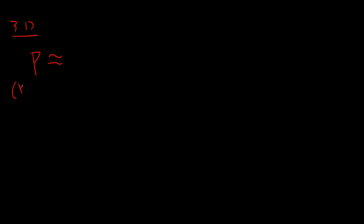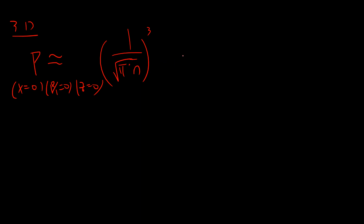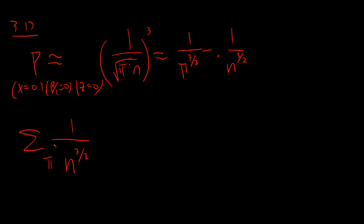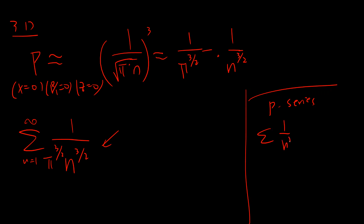Now let's solve the 3D case. It's exactly the same approach — you have x, y, z — and the probability at the origin after 2n steps goes as 1/(πn)^(3/2), so roughly 1/n^1.5. Summing this is a p-series: it converges since the exponent 1.5 is greater than 1.